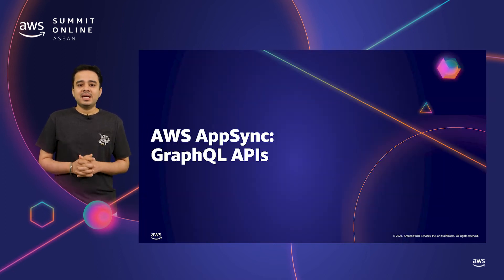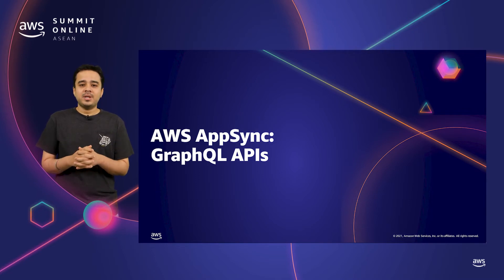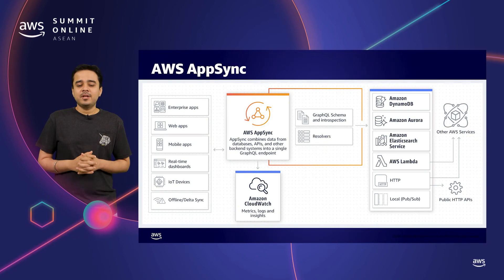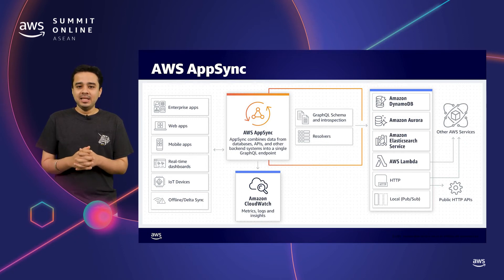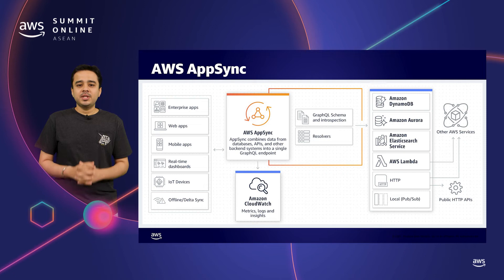Now let's talk about implementing GraphQL APIs. The most critical component of GraphQL is the server, which does the heavy lifting of understanding your query, invoking the relevant backend, and returning the response. If you plan to set this up on your own, there are open source options such as Apollo GraphQL Server or Express GraphQL, but you'll be responsible for provisioning, securing, scaling, and managing the server. The alternative is AWS AppSync — fully managed and serverless — which can interact with nearly any backend through resolvers: Amazon DynamoDB, Aurora, Amazon Elasticsearch, Lambda functions, or any HTTP APIs. AppSync is also integrated with CloudWatch for monitoring logs and insights.